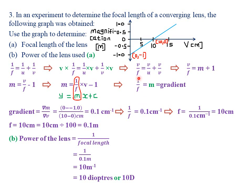Since 1/F equals the gradient, 1/F = 0.1. Taking reciprocals, F = 1 ÷ 0.1 = 10 centimeters. Converting to meters: 10 cm ÷ 100 = 0.1 meters. So the focal length is 10 centimeters or 0.1 meters.